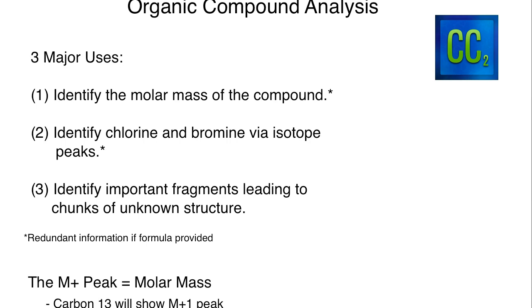Number two, you can identify chlorine and bromine via their isotope peaks. There will be M+2 peaks that are very characteristic, and we will take a look at an example of that later.